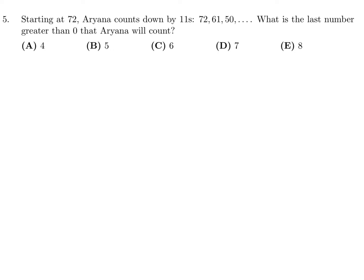Starting at 72, Ariana counts down by 11s: 72, 61, 50. What is the last number greater than 0 that Ariana will count? Let's keep going: 39, 28, 17, and then 6. After that it will get into the negatives. So the last number before 0 is 6. The answer is C.